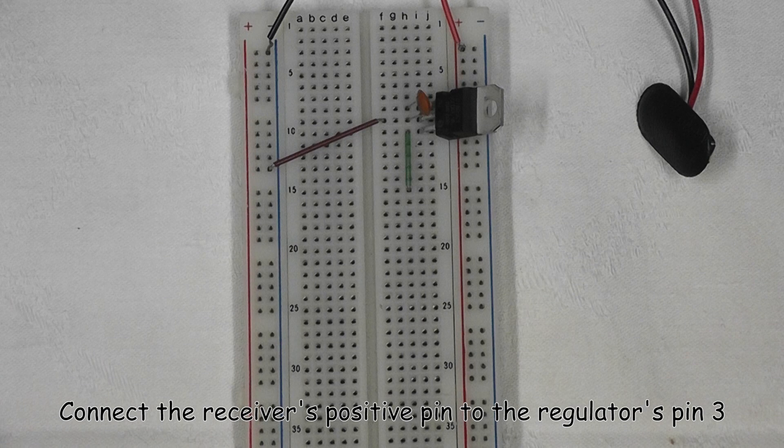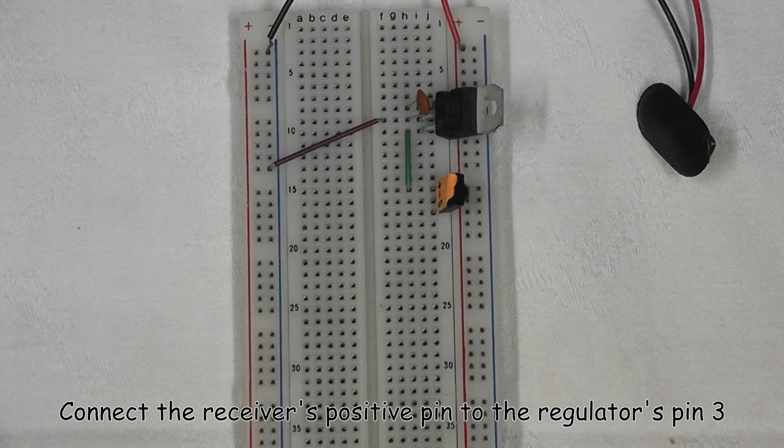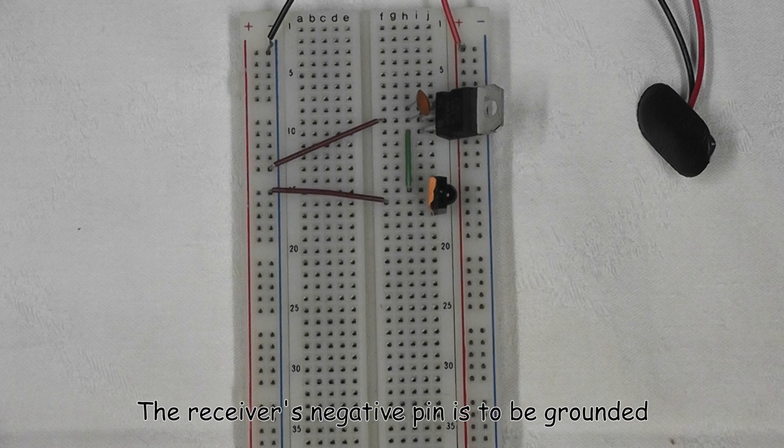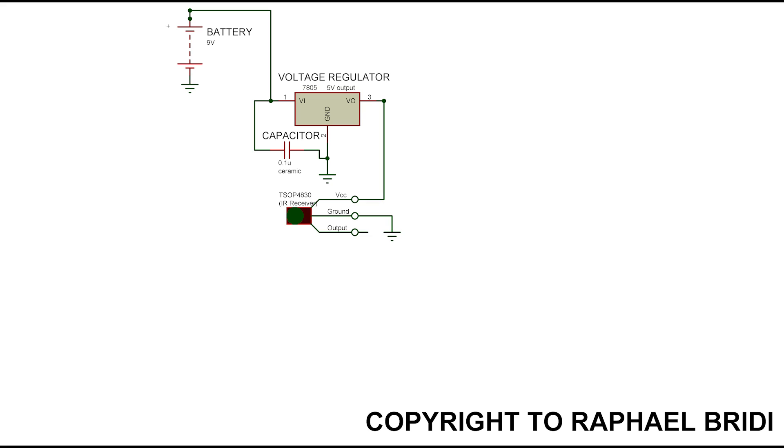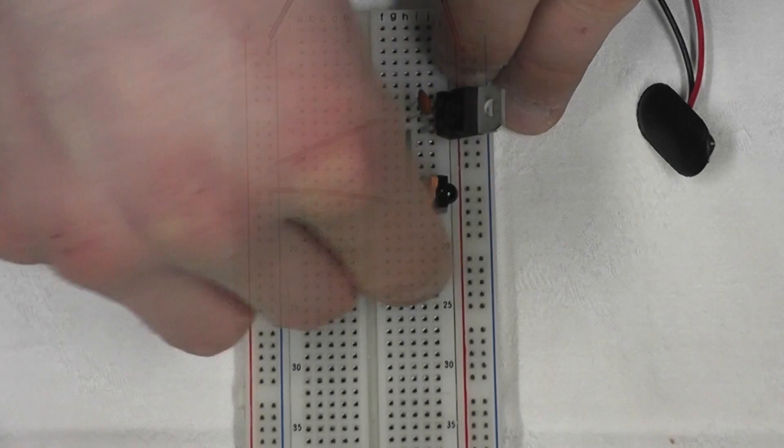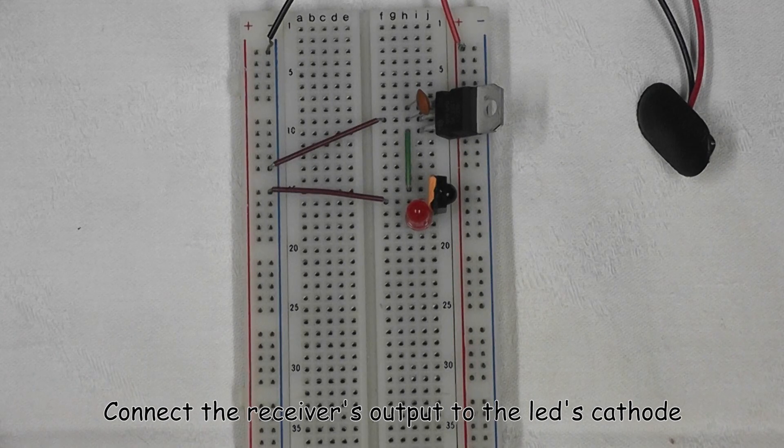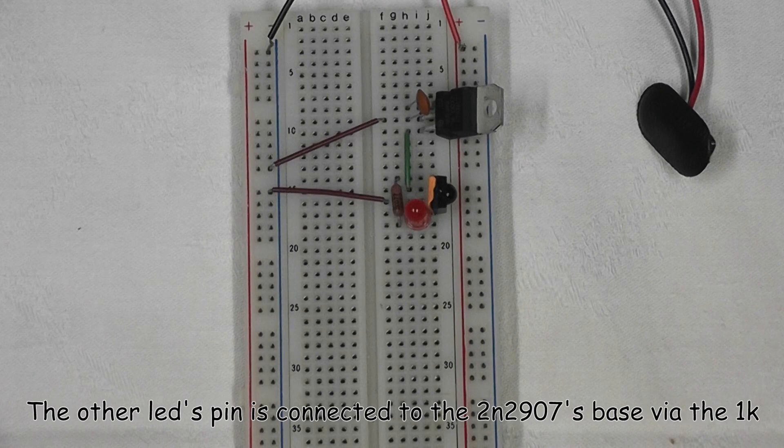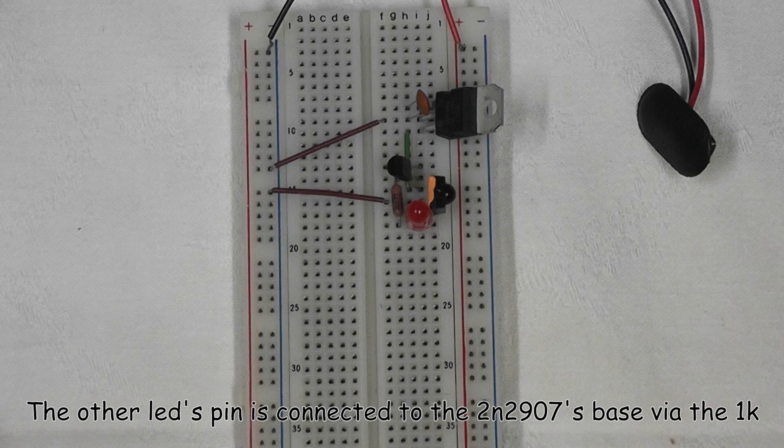Connect the receiver's positive pin to the regulator's pin 3. The receiver's negative pin is to be grounded. Connect the receiver's output to the LED's cathode. The other LED's pin is connected to the 2N2907's base via the 1K.